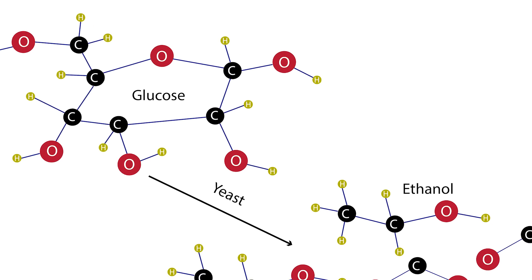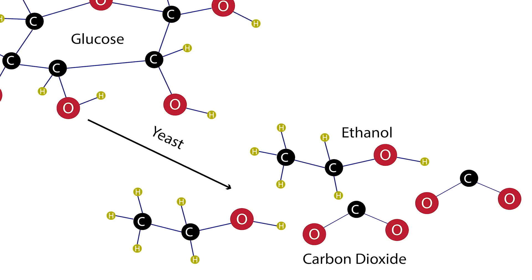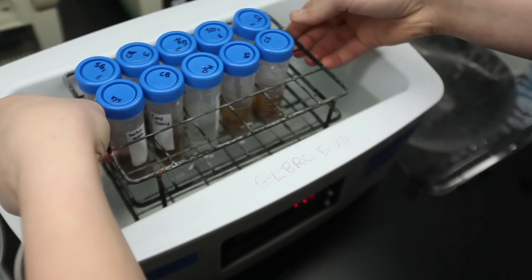The yeast will convert the available glucose in your samples into ethanol and carbon dioxide. After adding the yeast, you can return the tubes to the water bath overnight.